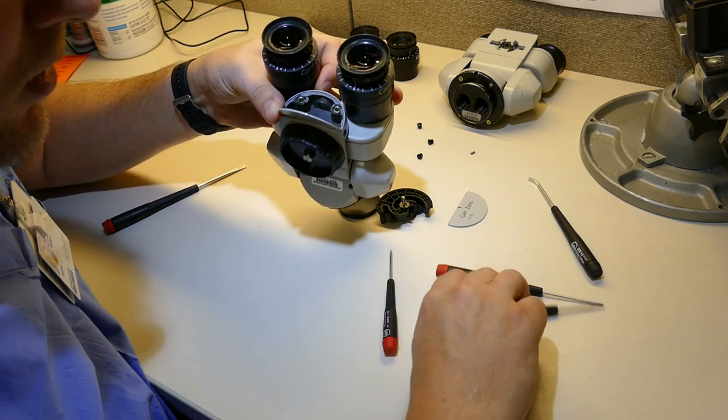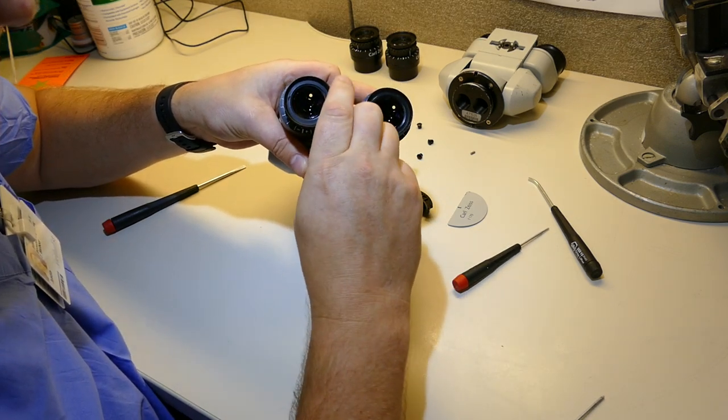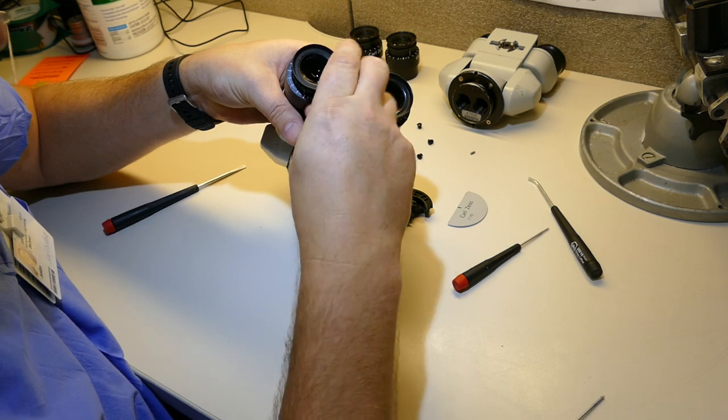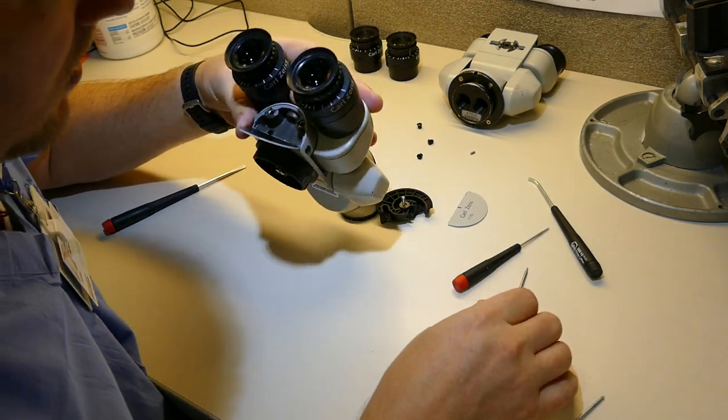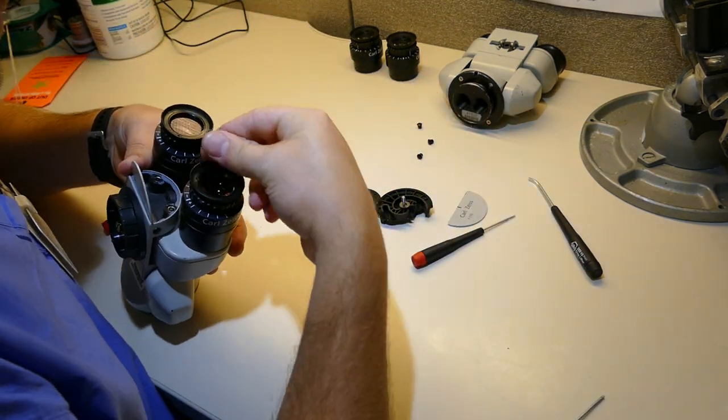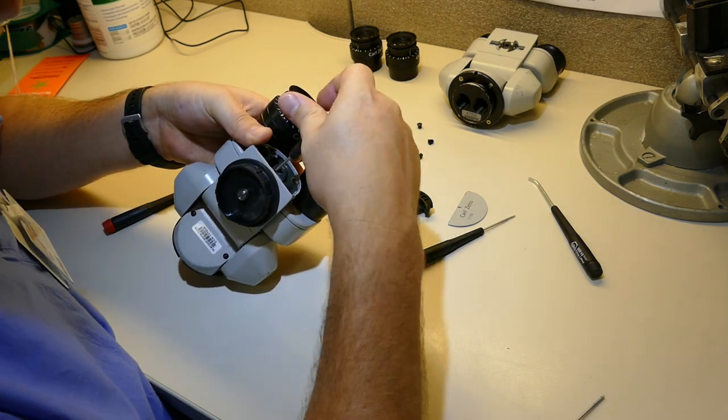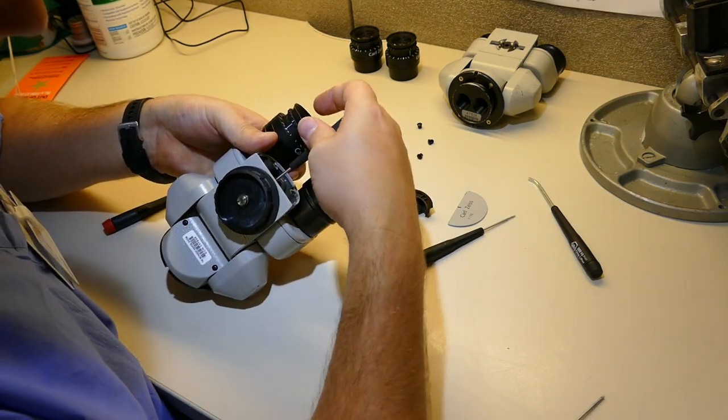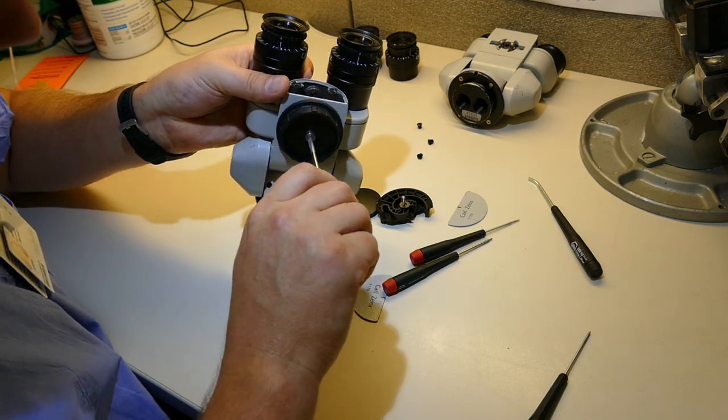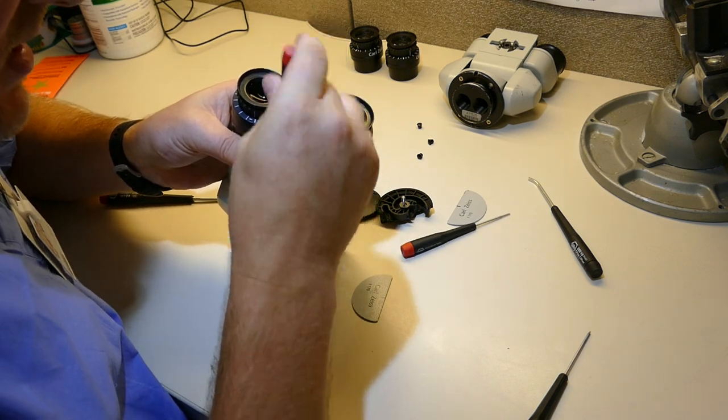The very last step. We're going to put our set screw all the way back in. Before I tighten down that set screw all the way, I'm going to make sure this is tensioned correctly. Then I'll tighten that set screw down.